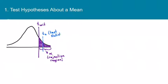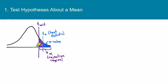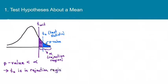Now let's draw a test statistic in the rejection region. The p-value is the area beyond the test statistic. Notice that the p-value is smaller than alpha — you can see the rest of alpha peeking out. So whenever the p-value is less than alpha, that necessarily means the test statistic is in the rejection region, and we reject H-naught.